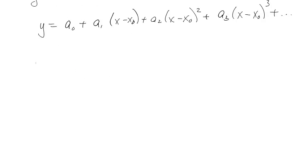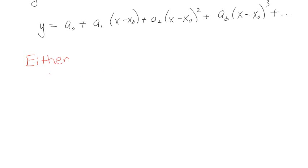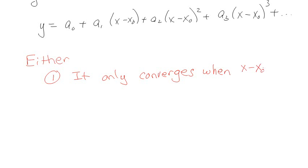Either two things are going to happen. One: it only converges when x minus x₀ is equal to 0, which makes sense because then it converges clearly to a₀, since all the other terms would be 0. So it converges to a₀ — that's one option.